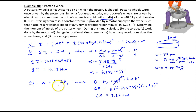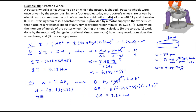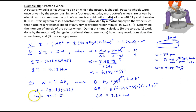Now we can calculate the work. Work equals torque times angle: 8.18 newton·meters multiplied by 5.36 radians gives 43.8649, which we round to 43.9 joules. Note that this W represents work, not angular frequency.